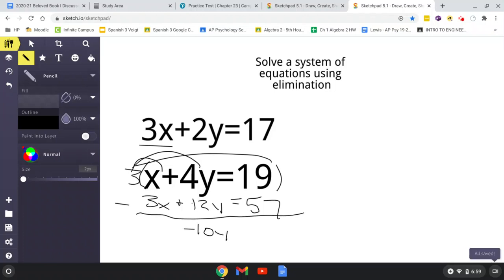Then 17 minus 57 equals negative 40. Divide, and y equals 4. Now we just solved for y.